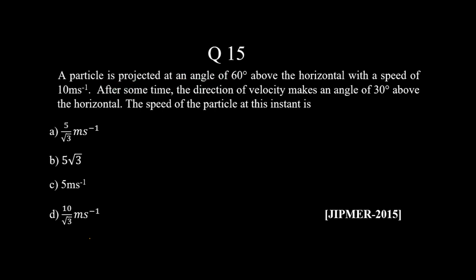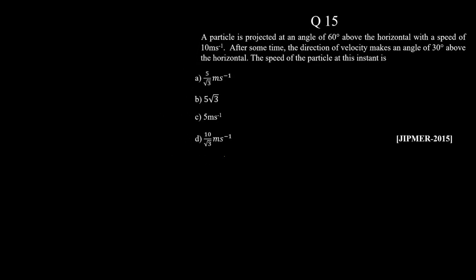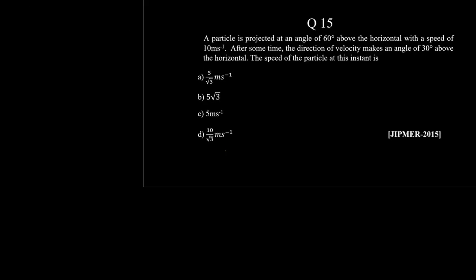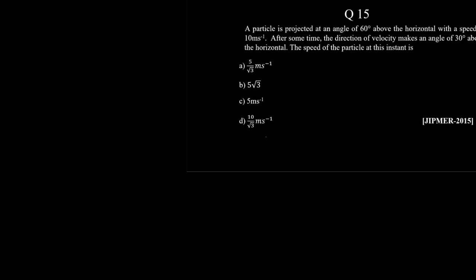A particle is projected at an angle of 60 degrees above the horizontal with a speed of 10 meters per second. After some time, the direction of the velocity makes an angle of 30 degrees above the horizontal. The speed of the particle at this instant is asked — a simple but conceptual question with respect to the data given.